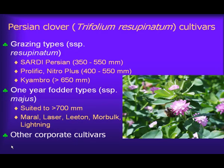As for Persian clover, there are two types. Firstly the grazing or resupinatum types: Sadi, Persian Prolific, and Nitro Plus are suited to medium rainfall areas, and Chi Ambro for high rainfall areas. There are also fodder types — the erect growing magnus types — which are well suited to making very good quality hay or silage, and are really only suited to very high rainfall areas. Maril is the original cultivar, but more recent ones include Laser, Lesion, Moor, Bulk, and Lightning, along with others released by seed companies.